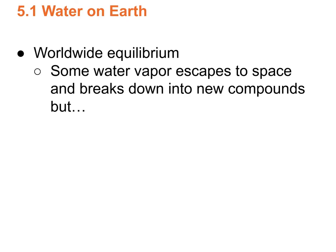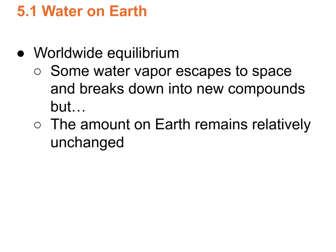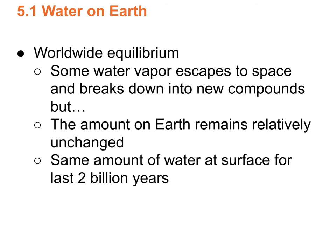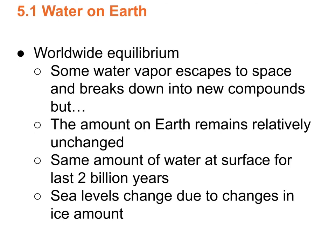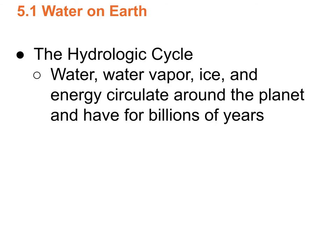Some water escapes into space; some is released from inside Earth to the atmosphere. The amount of water on Earth has been relatively unchanged for about the last 2 billion years. Sea levels go up and down based on how much water is stored as ice. 20,000 years ago, sea levels were about 360 feet lower worldwide because about 30% of Earth was covered by ice. Now about 10% of Earth is covered by ice — a major difference in sea levels.